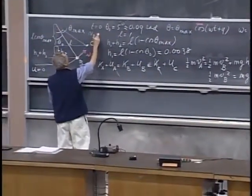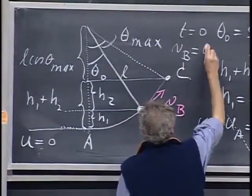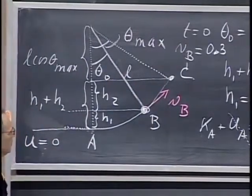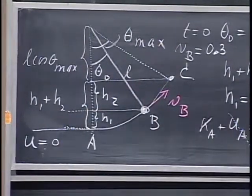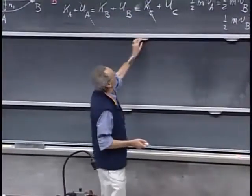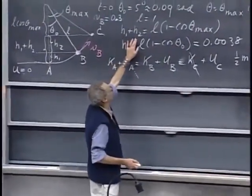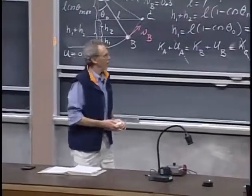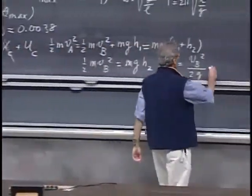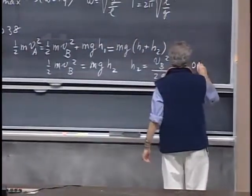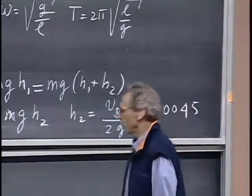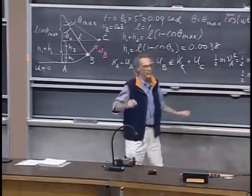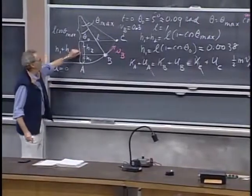The speed v_B I had in mind is 0.3 meters per second. Numbers aren't critical since you won't have a calculator at the exam. h2 turns out to be about 0.0045 meters — 4.5 millimeters. So h1 was 3.8 mm and h2 is 4.5 mm higher. From h1 + h2 = L(1 − cos θ_max), you can calculate the cosine of theta-max.